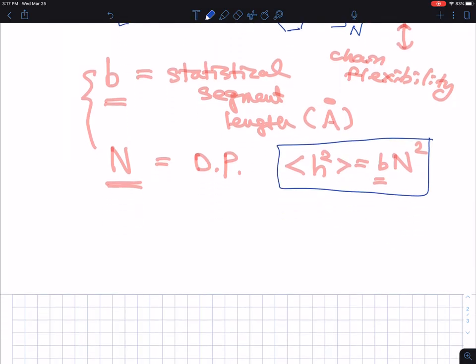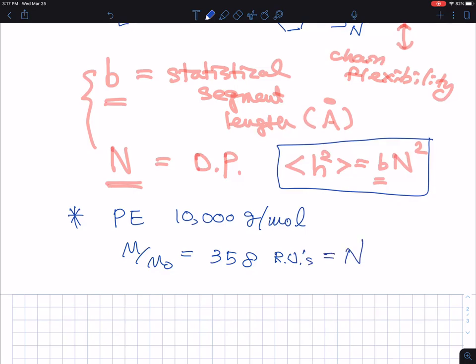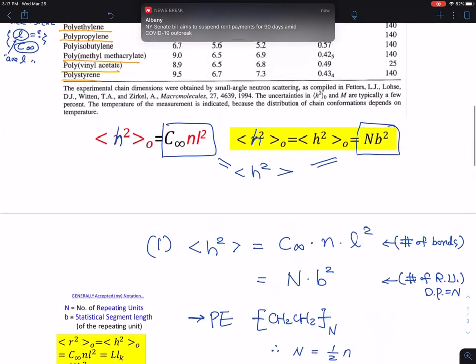You just need to find the proper length scale that can be used to describe the polymer chain. Okay, so that's the one. So we can go back to our usual model, polyethylene, 10,000 gram per mole, M over M naught. You remember, I don't have to repeat this one to you, but 358 repeating units, right? So this is a RU. And that's what we call N, right?